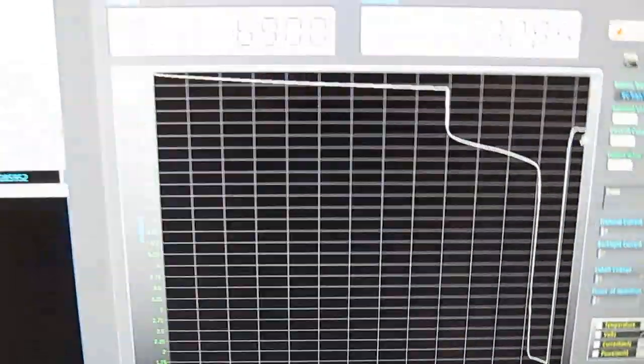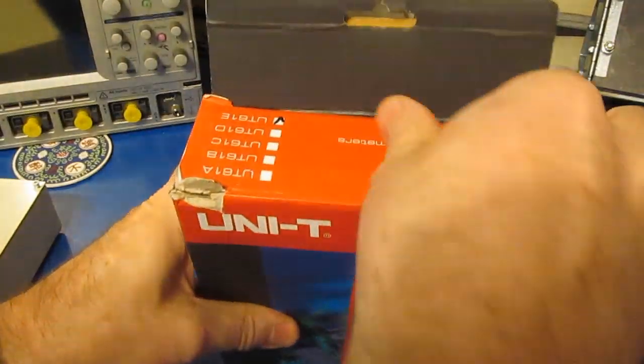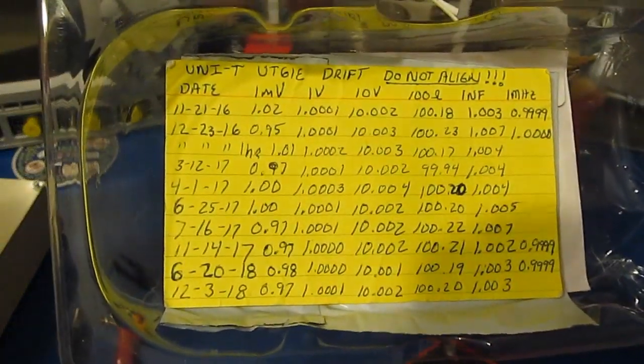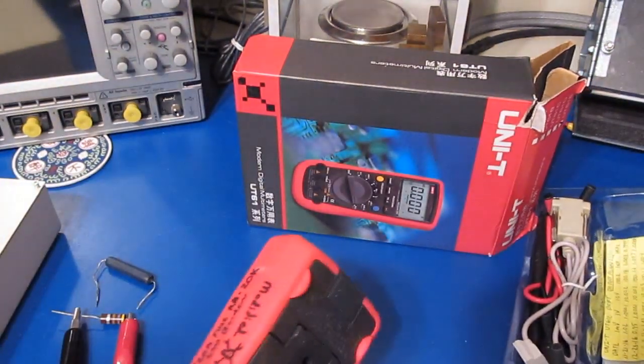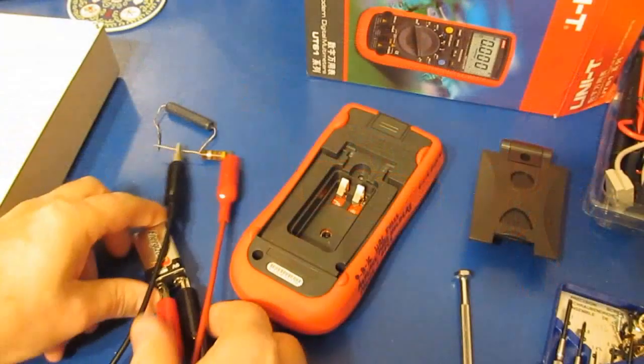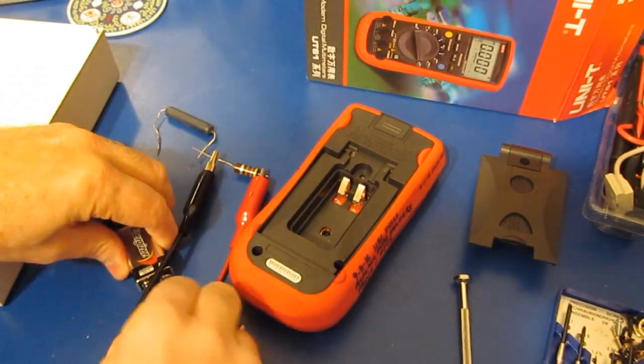So this is the modified UT61E. This is some data I've been collecting for this meter since I've had it. I'm just trying to get an idea how this thing drifts over time. All right, let's go ahead and take our battery off the test jig.